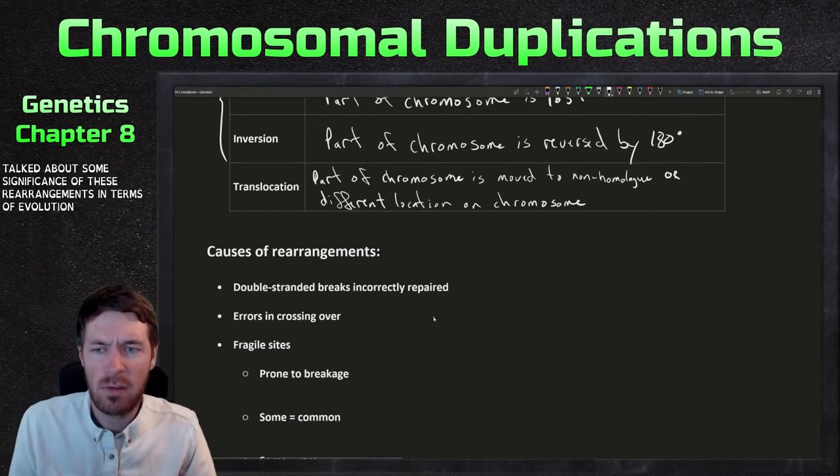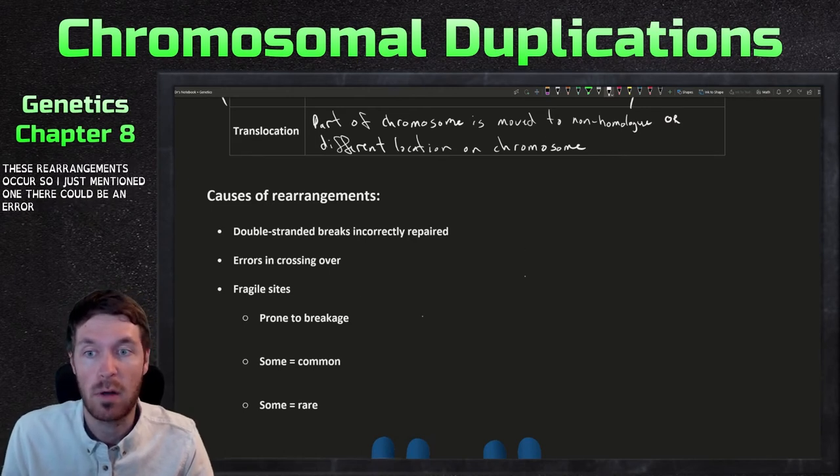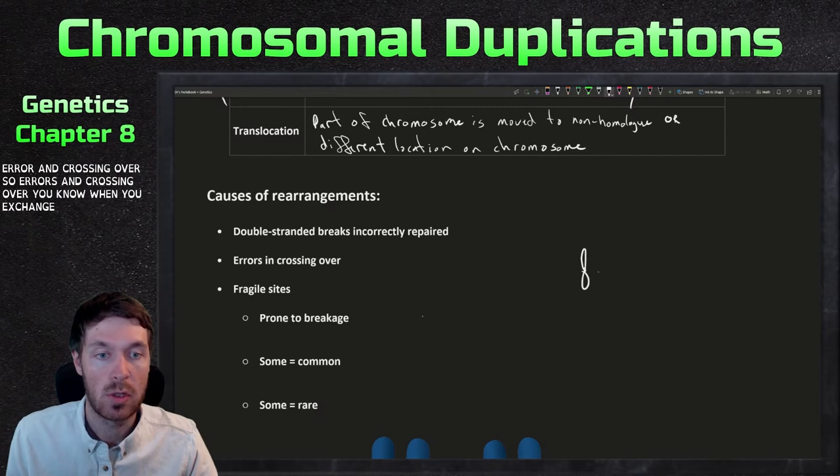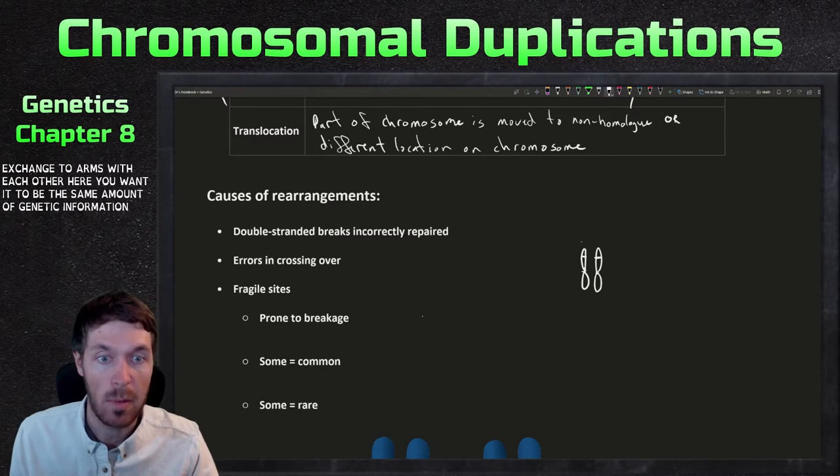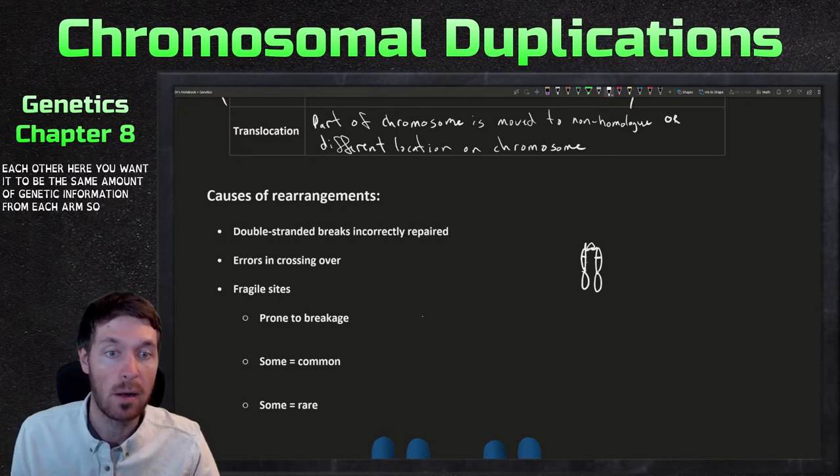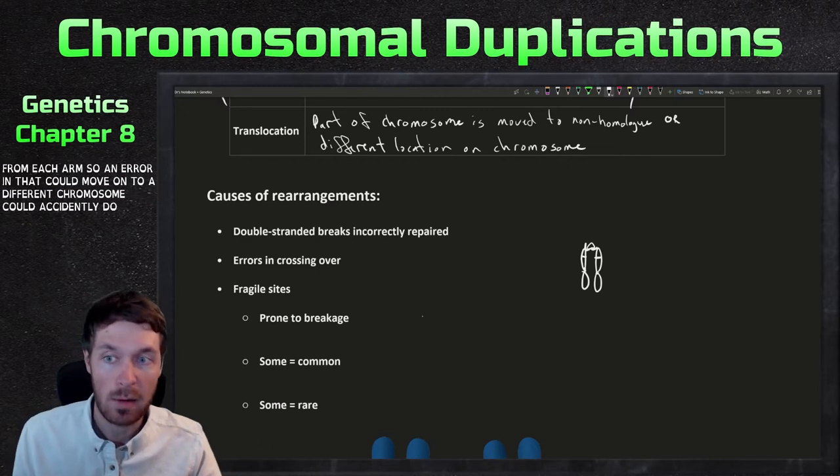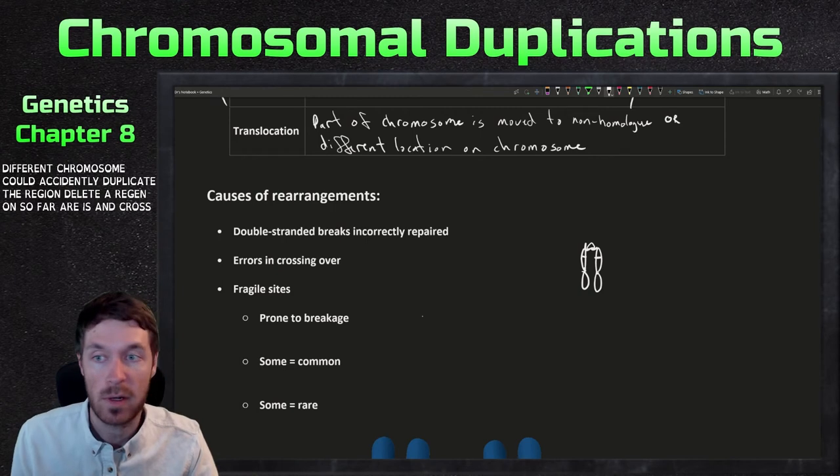So how do these rearrangements occur? I just mentioned one, there could be an error in crossing over. So errors in crossing over, when you exchange two arms with each other here, you want it to be the same amount of genetic information from each arm. So an error in that could move on to a different chromosome, could accidentally duplicate the region, delete a region, and so forth. So errors in crossing over is a big one.